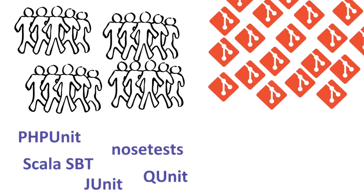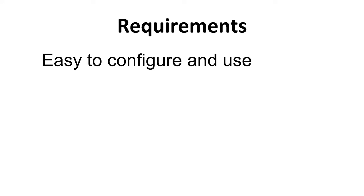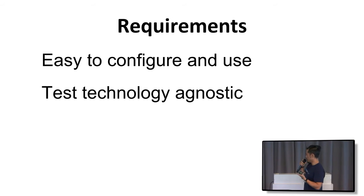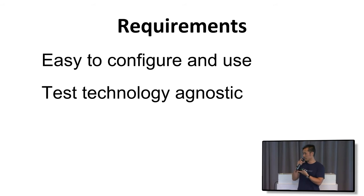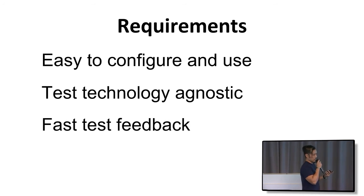Before determining what tool to adopt, we first analyzed our requirements. At Box, we have several teams, dozens of Git repos written in several different languages, each with their own unit testing frameworks, plus functional tests, performance tests, linters, and all that. Some of these test suites take a very long time to complete. So our requirements were: first, it has to be easy to configure and use, because engineering teams own their own CI configurations and won't adopt something that requires a whole DevOps team; second, it has to be test-technology agnostic since we have many different frameworks; and third, it has to give us fast test feedback.